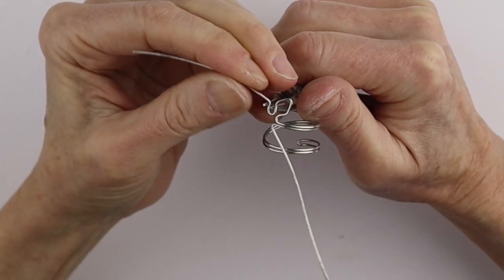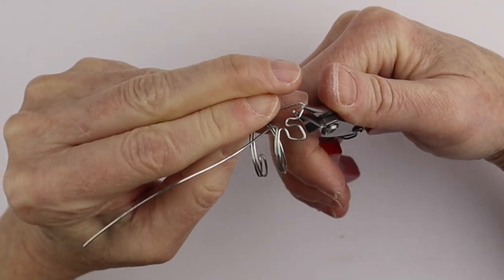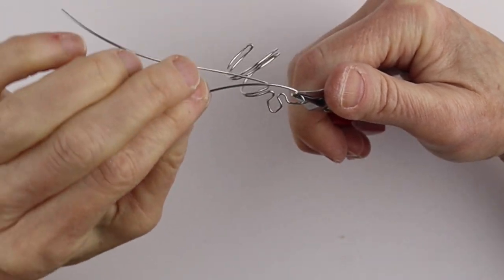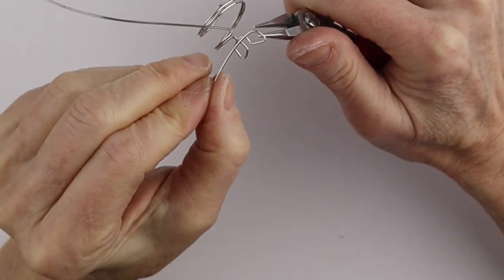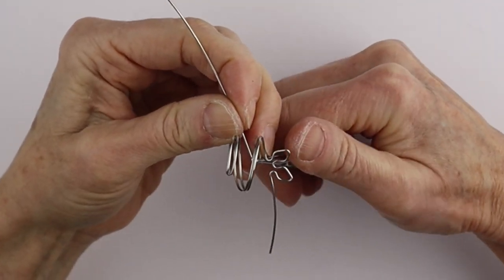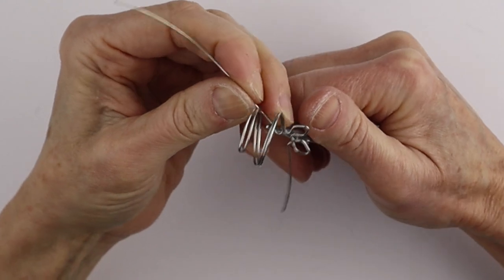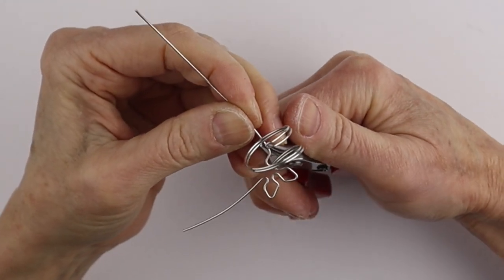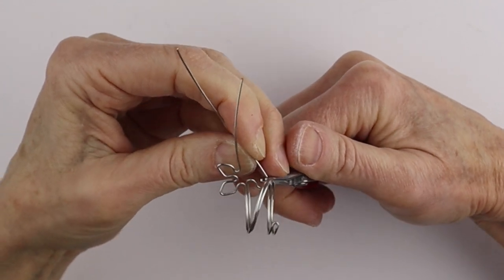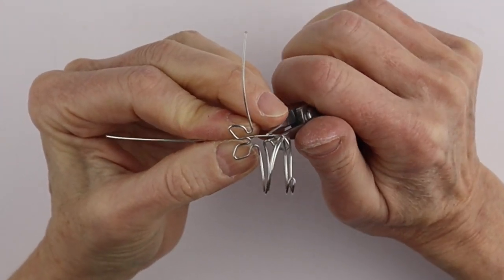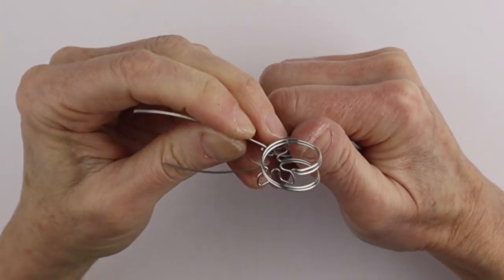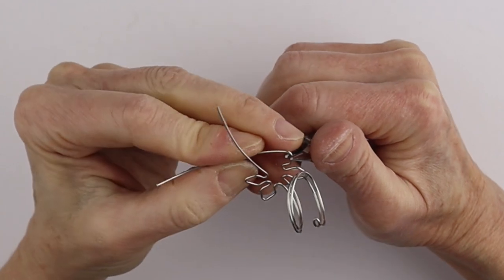And then up and down and down and then straight up. So we're going to bring this one down and just try to replicate the other side. Don't worry too much if it's not completely symmetrical. And around, up, down, down, and up.